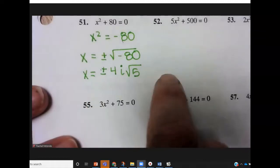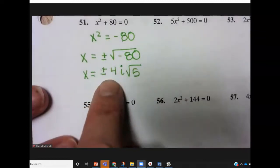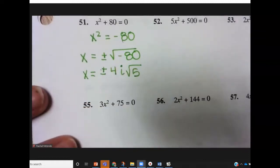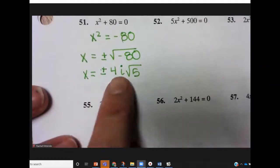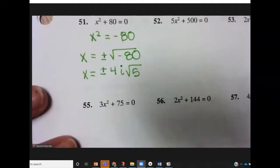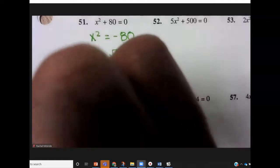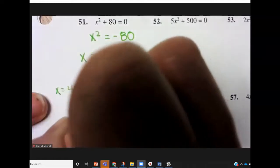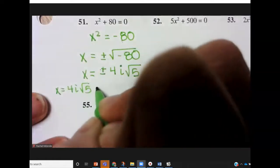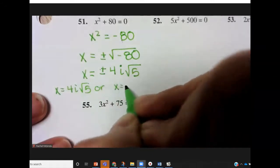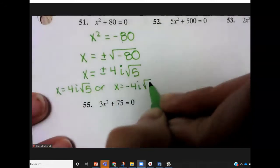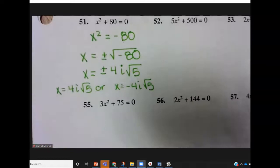Because 80 was 16 and 5, square root of 16 is 4. The negative became an i. So that's really representative of two answers. It's representative of x equals 4i square roots of 5 or x equals negative 4i square roots of 5. That plus or minus is really just saying that there are two answers there.